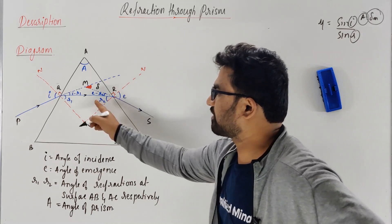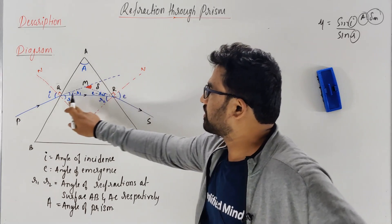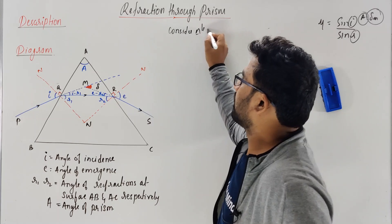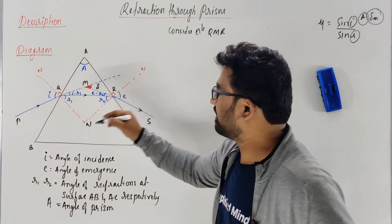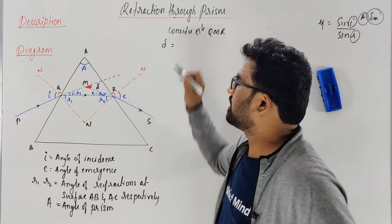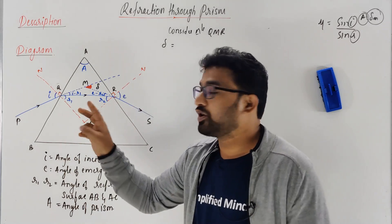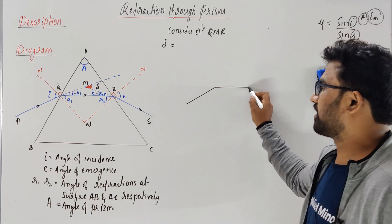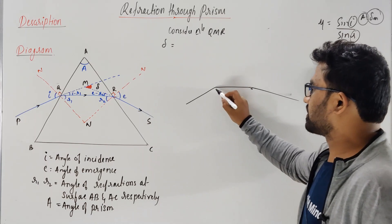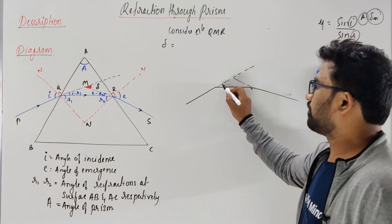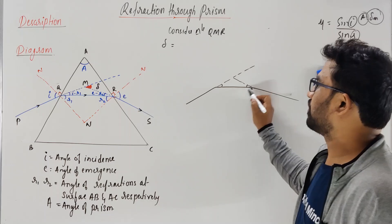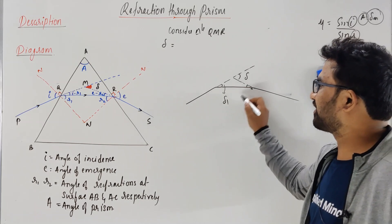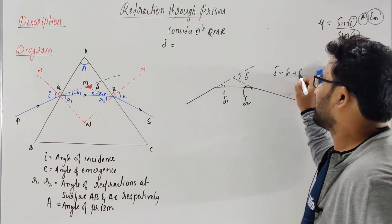So let's directly start with the deviation. If you consider triangle QMR, the total deviation is the sum of the two deviations. The ray got deviated two times — once at each surface. So deviation delta equals delta1 plus delta2. Using vertically opposite angles, delta1 is I minus R1, and delta2 is E minus R2. So the total deviation delta is equal to delta1 plus delta2.